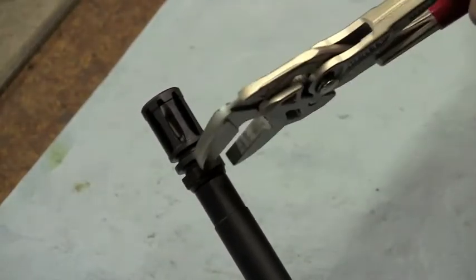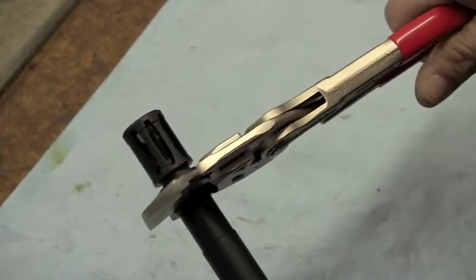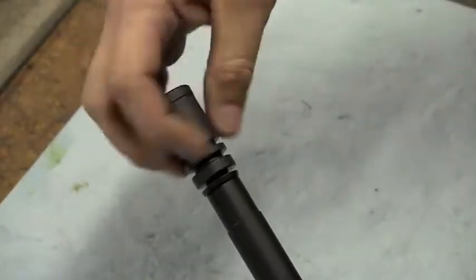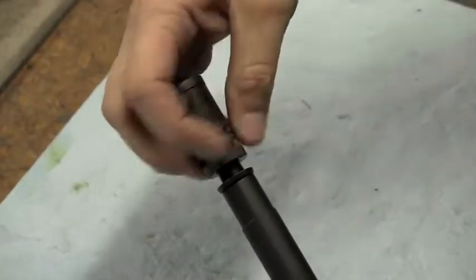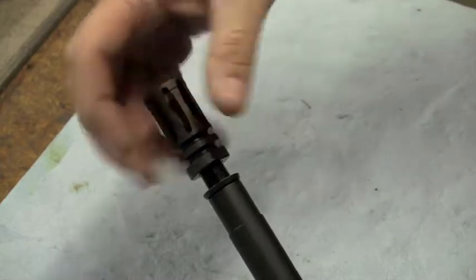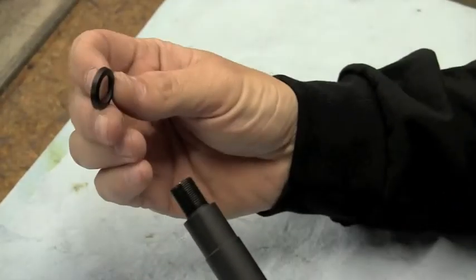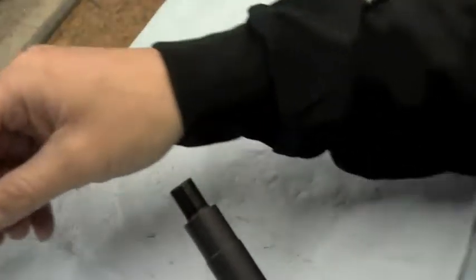You're going to want to remove your existing muzzle device, whatever you may have on there, and remove your crush washer with it and discard it.